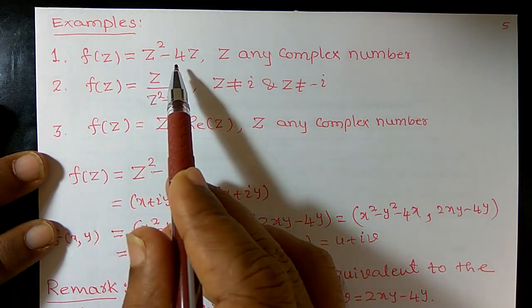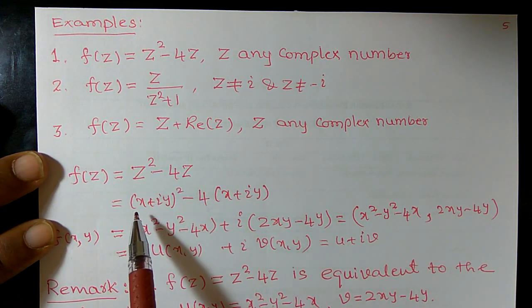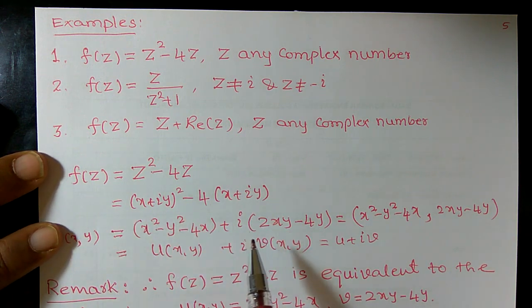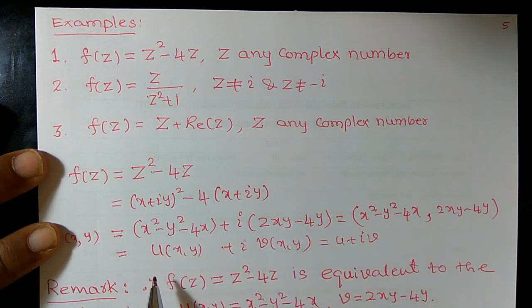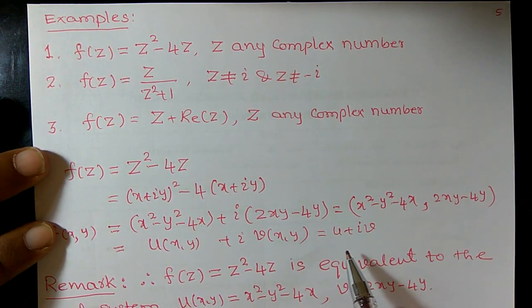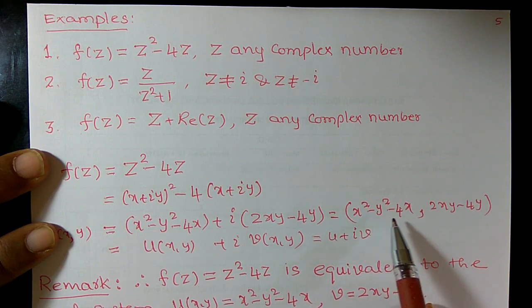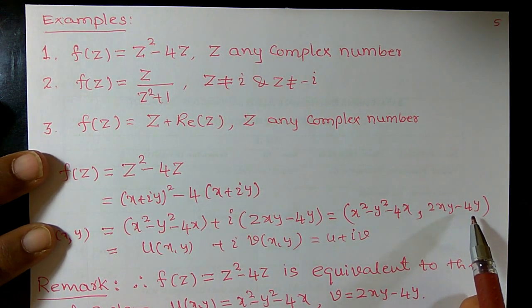So I want to consider first one f(z) = z² - 4z, replace z by x + iy. Then you can expand, separate the real and imaginary parts. I hope we are able to write down in this form. And it is of the type u(x,y) + i v(x,y) or simply u + iv. Where u(x,y) = x² - y² - 4x, v(x,y) = 2xy - 4y.